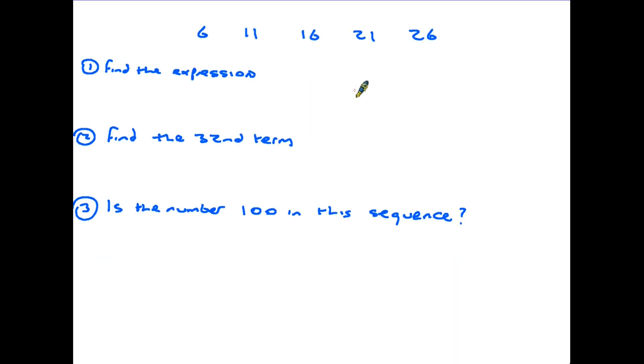So finally let's summarize everything that we've done by using this sequence. The first question, find the expression. So we look for the gap. It is going up in fives. Therefore the expression is going to start with 5n. We take it back a step to what the previous number would have been by going back another 5 and we end up on the number 1. So it's 5n plus 1. Don't forget if we go into the negatives we put a minus there. That doesn't happen in this case.